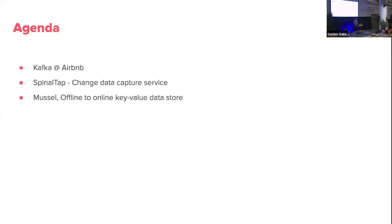Today we're going to talk about three topics. The first one is some basic Kafka information and deployment at Airbnb. Then we're going to dive into two systems we build at Airbnb: one is called SpinalTap, which is our change data capture service; and then we're going to talk about Muscle, which is our offline to online data store.